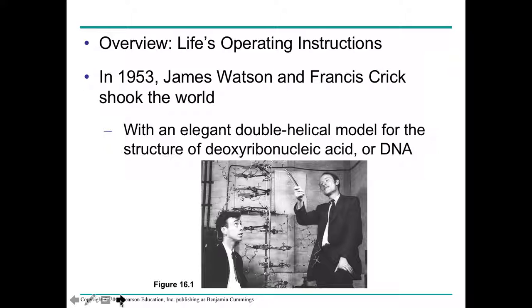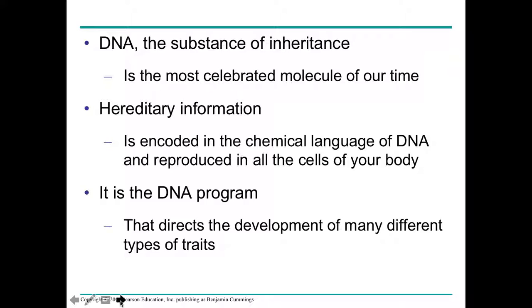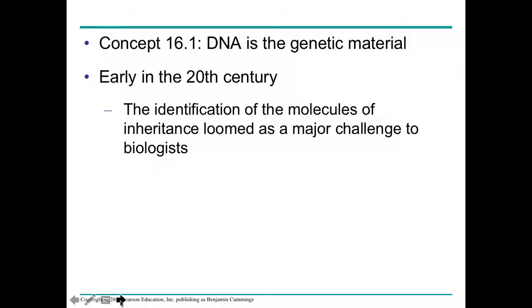DNA basically has all of the instructions that you need to make you. In the 50s, James Watson and Francis Crick figured out the structure of DNA, which is a double helix — basically a twisted ladder. DNA stands for deoxyribonucleic acid. It has all of the blueprints to make every organism who they are, containing hereditary information in every single cell, and has the information to make our traits.